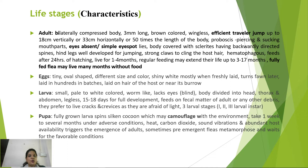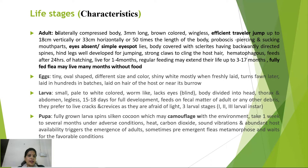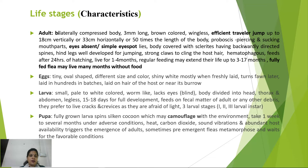Flea eggs are tiny, oval, and shiny white, turning spawn-colored over time. They are laid in batches on the host's hair or near rat burrows. Larvae are small, pale to white, vermiform, blind, and legless, with the body divided into head, thorax, and abdomen. Development takes 15 to 18 days across three larval instars; larvae feed on fecal matter of adults and other debris.